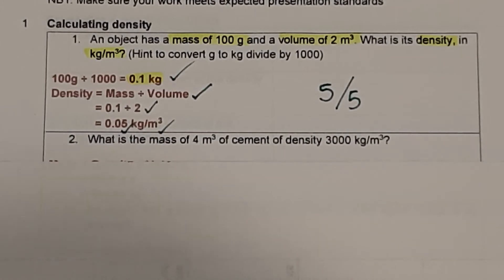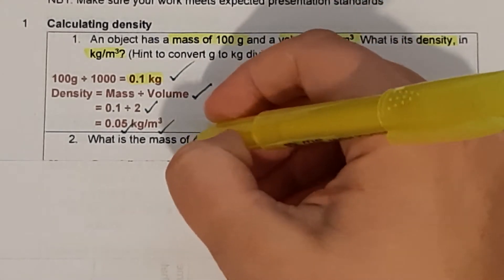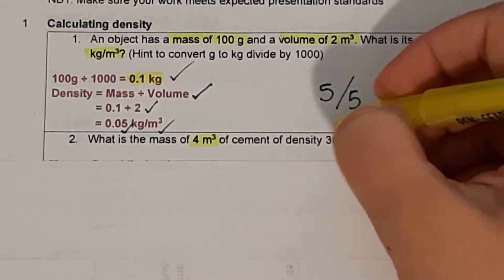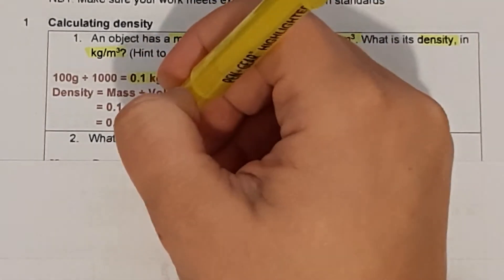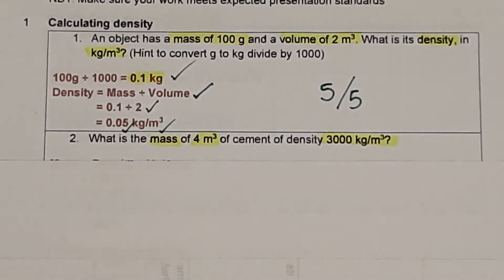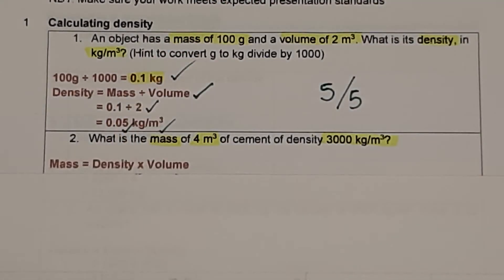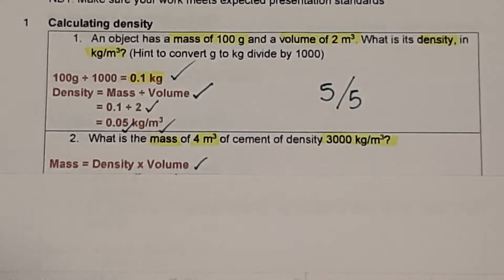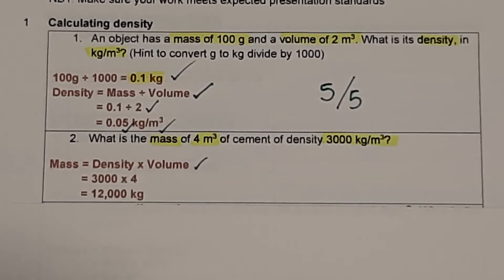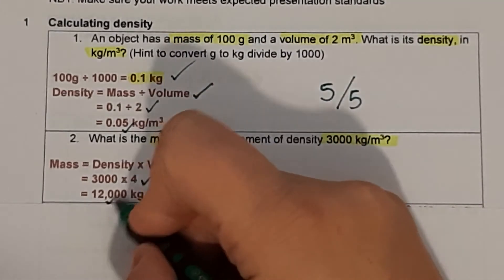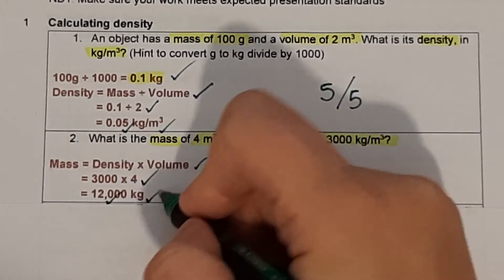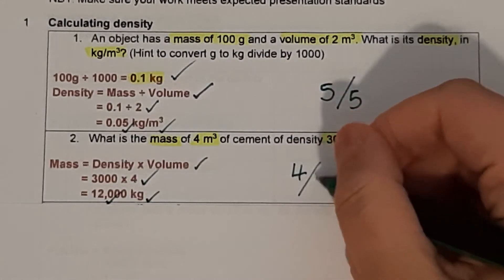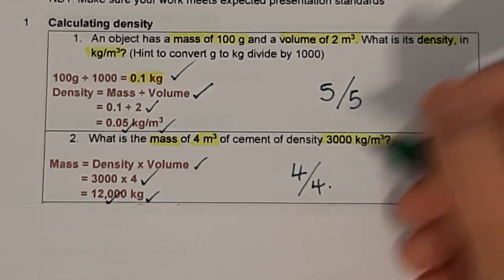Question 2: what is the mass of 4 metres cubed of cement with a density of 3,000 kilograms per metres cubed? Mass equals density multiplied by volume: 3,000 multiplied by 4 equals 12,000 kilograms. Give yourself a mark out of 4.